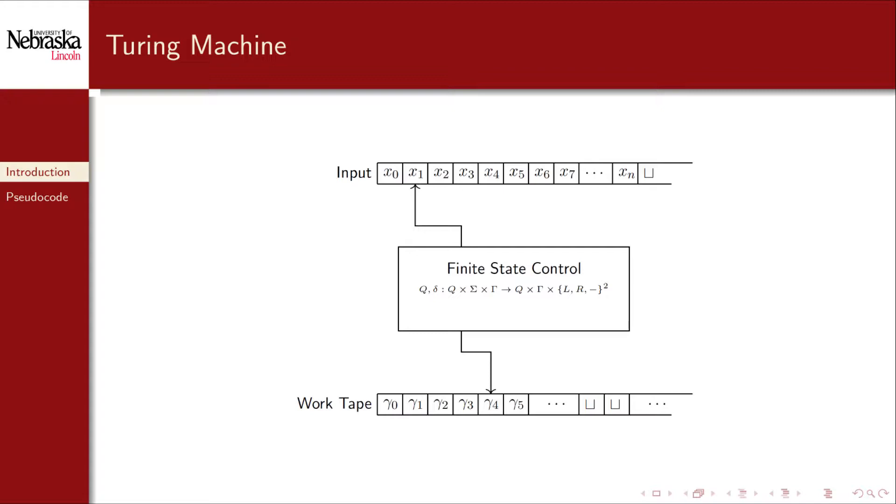A Turing machine is a mathematical model of a computer that has a finite read-only input tape in which the input is assumed to be stored and an infinite work tape. The machine is defined by its finite state control which has a collection of states. In short the machine is able to look at one bit of the input tape, one bit of the work tape, and then transition to a new state optionally overriding what is stored in the work tape and moving the two tape heads left or right or not at all.